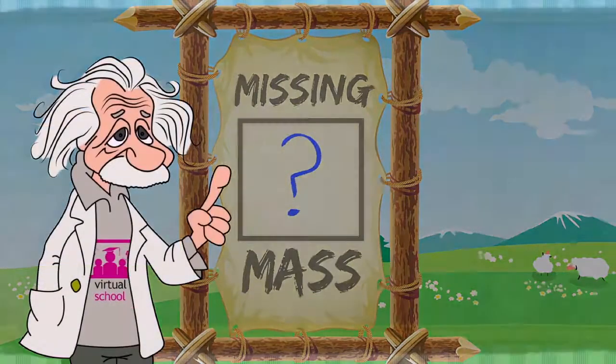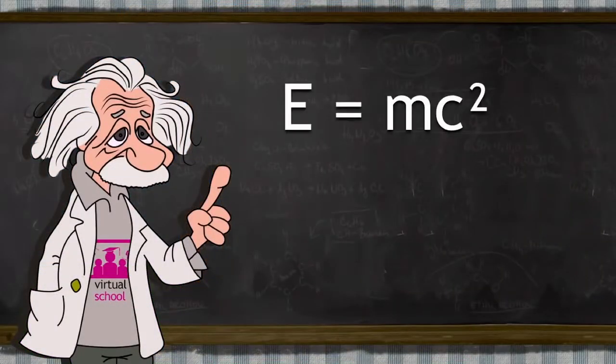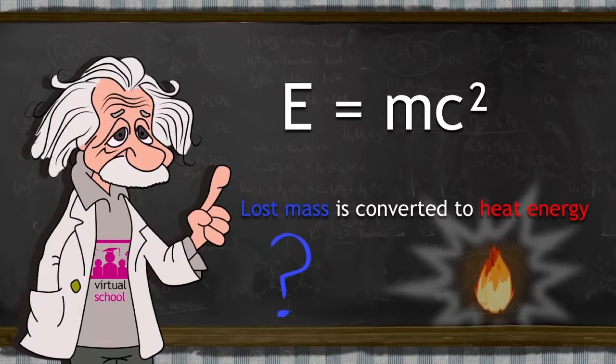Einstein's famous equation, E equals MC squared, shows that this incredibly small amount of lost mass is converted into a huge amount of heat energy. So we know each atom splitting up gives off some heat energy.